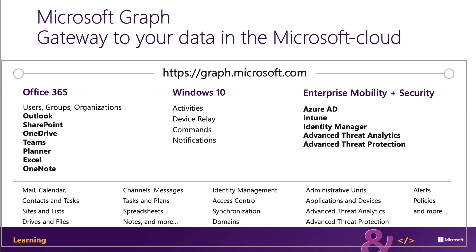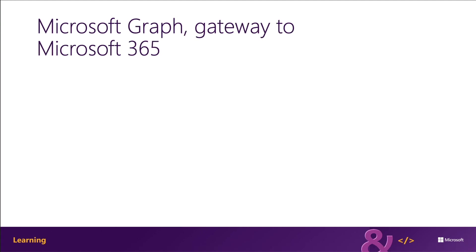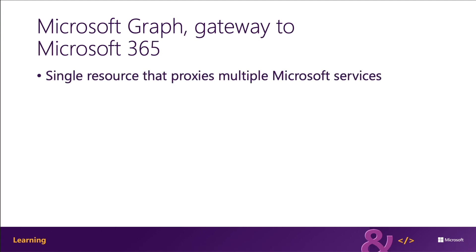Many of these services have their own APIs that developers can interact with. However, this can be challenging when going to each individual service with its own endpoint. Each API may have its own permission model with individual access control configurations. Different endpoints also mean that a custom application needs to obtain an access token from Azure AD for each endpoint. One of the benefits of Microsoft Graph is that it serves as a proxy endpoint to all of these other services.